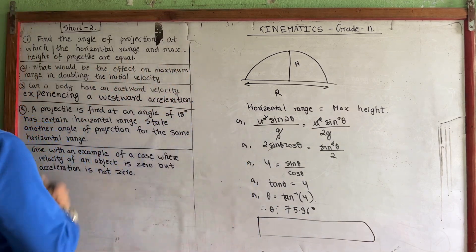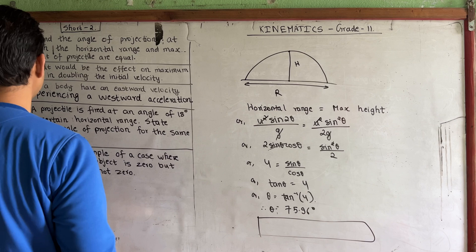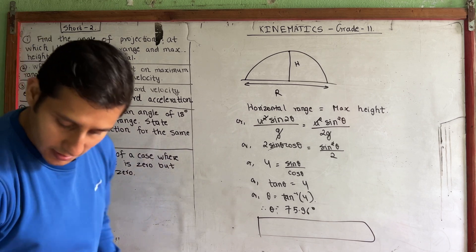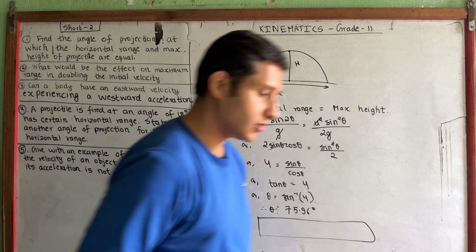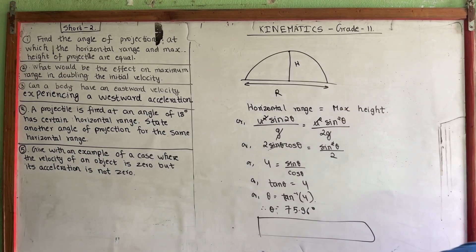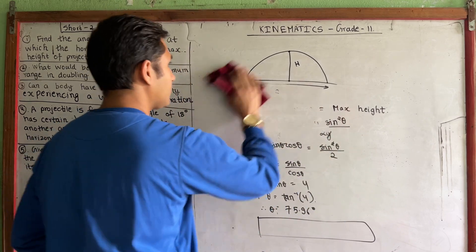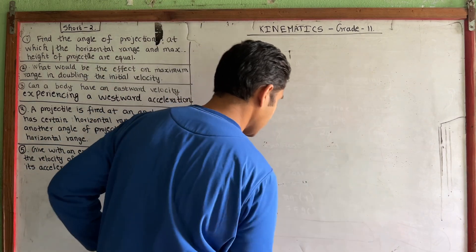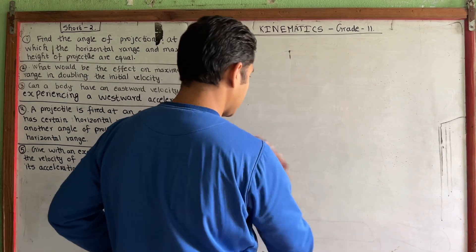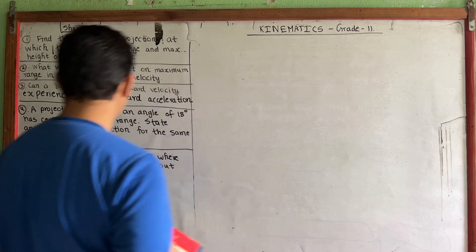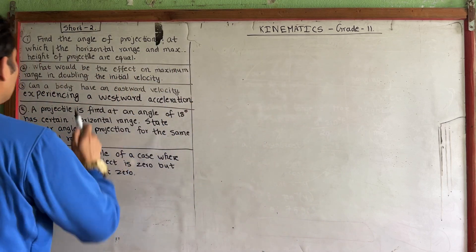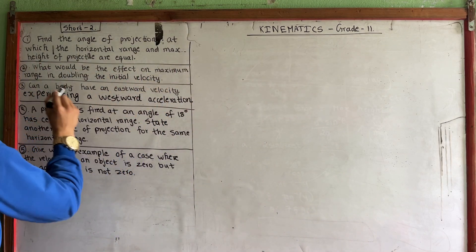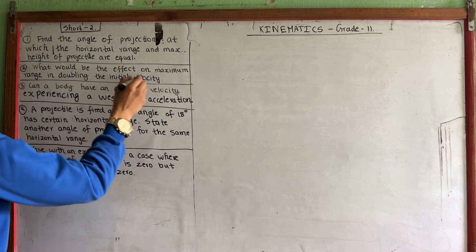So that's question number 1 done. Let's move on to question number 2. Question number 2: What would be the effect on maximum range if the initial velocity is doubled?